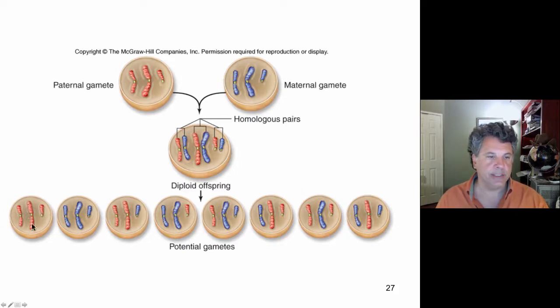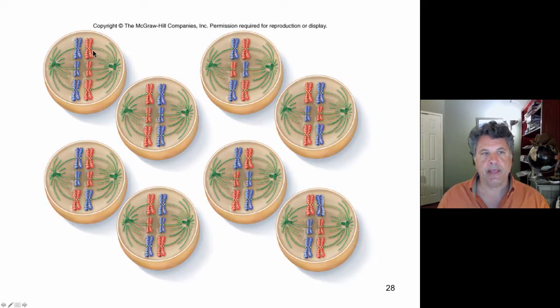So we can have three reds in a gamete, three blues, two reds and a blue, two blues and a red, and different combinations of those. Eight possible different combinations are possible. If there were four pairs of homologous chromosomes, there would be sixteen possible potential gametes. And that is because, and this is a very important point before we enter into Mendelian genetics, the chromosomes are independent in the way they can line up at the metaphase plate.